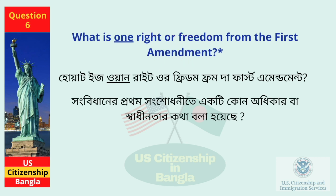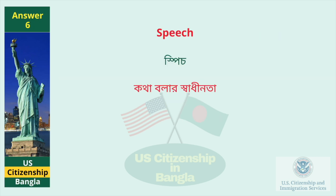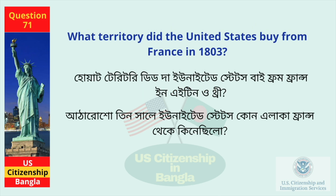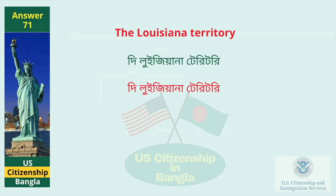What is one right or freedom from the First Amendment? Speech. What territory did the United States buy from France in 1803? The Louisiana Territory.